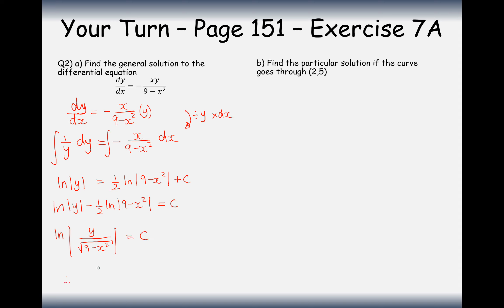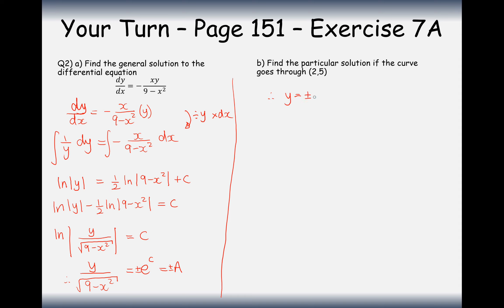Therefore y over the square root of (9 minus x squared) equals e to the c, which we'll call capital A. Because of the modulus, this could be plus or minus A. Multiplying the square root of (9 minus x squared) onto the right-hand side gives: y equals plus or minus A times the square root of (9 minus x squared). Be careful with ln integrals — you need modulus symbols, and when you remove them it turns into a plus or minus.